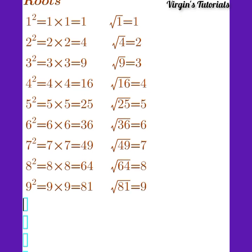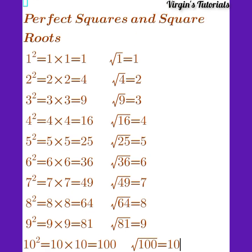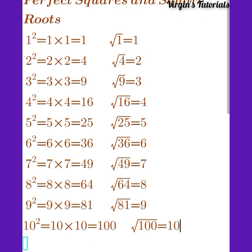Now, we have 10, and 10 is just where we end. 10 squared is simply equal to 10 times 10, which is equal to 100. When we have the square root of 100, we simply have 10. This is what we actually call perfect squares and square roots. The left-hand side is the perfect square, and the right-hand side — the one that has the radical sign — is the square roots.